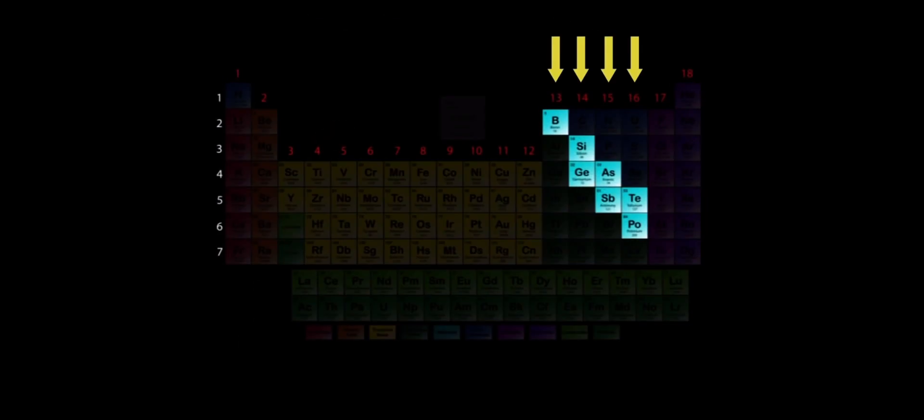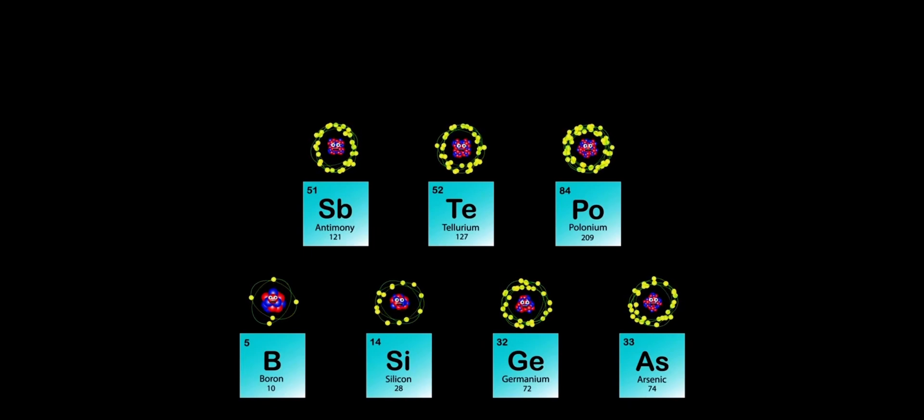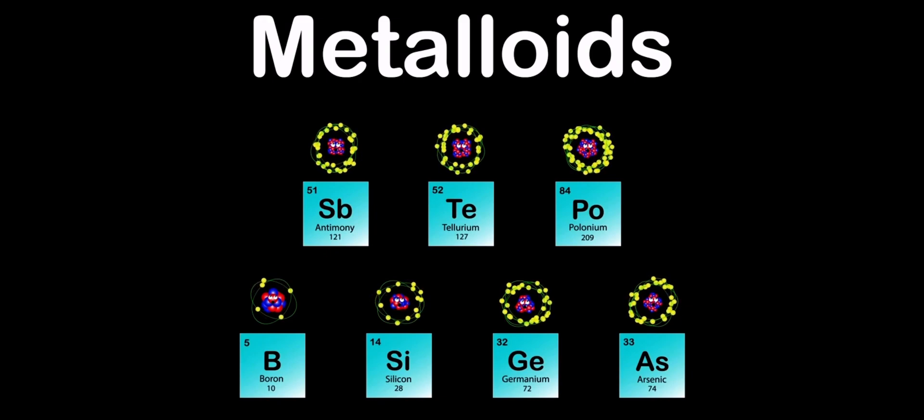We are the Metalloids of the Periodic Table. Groups 13 through 16 and periods 2 through 6 is where you find us in the Periodic Table Mix. We are the Metalloids of the Periodic Table.